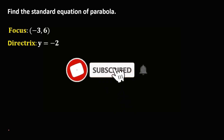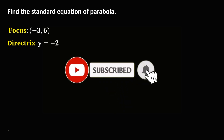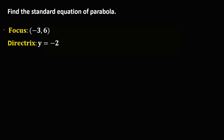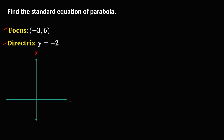Let's have this problem: find the standard equation of a parabola with a given focus and directrix. First, we need to graph this parabola. So in a Cartesian plane, with positive y and positive x. From the given, x is negative 3.